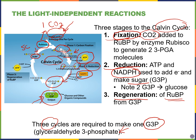These G3P molecules are put together to produce glucose, starch, or even cellulose for plant cell walls. At the end of the cycle, RuBP must consistently be regenerated, and that requires additional ATP.